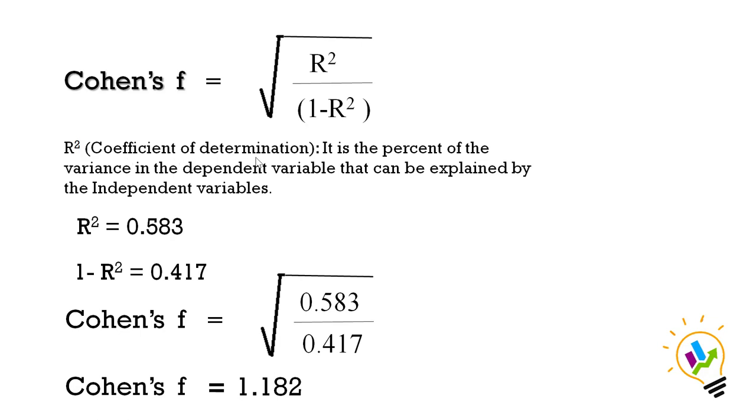Now, r square is also called coefficient of determination. It is the percent of the variance in the dependent variable that can be explained by the independent variables. In the analysis, we have seen r square value 0.583, so 1 minus r square equals 0.417.